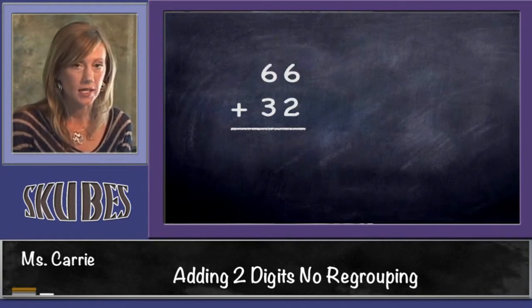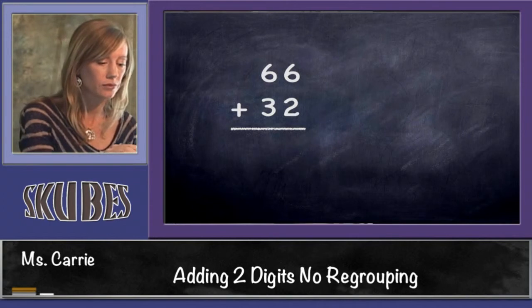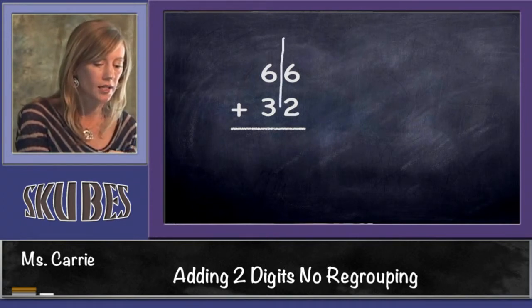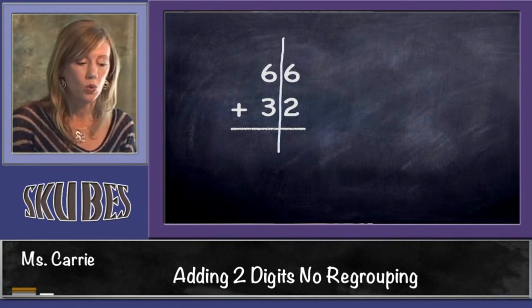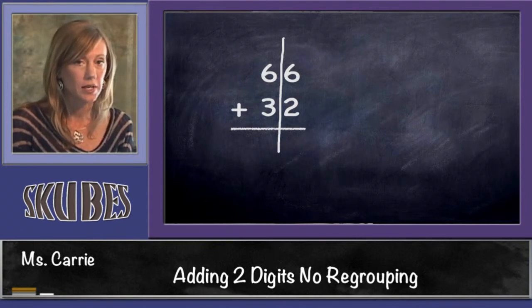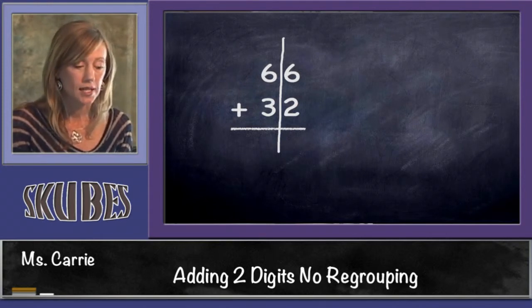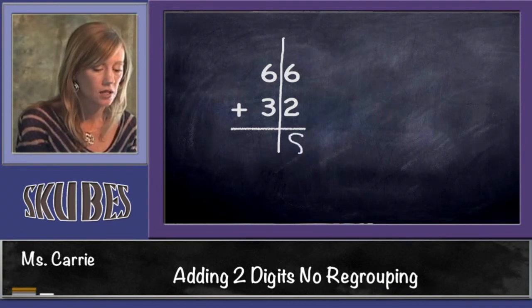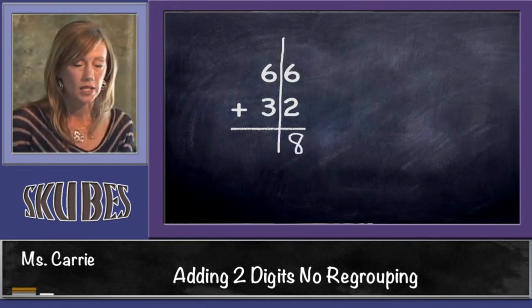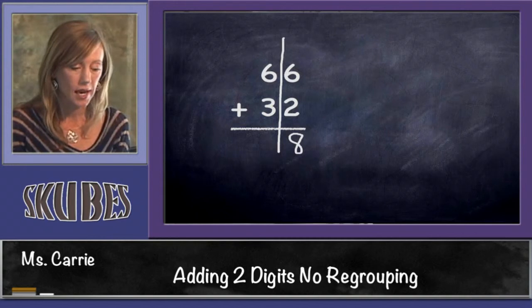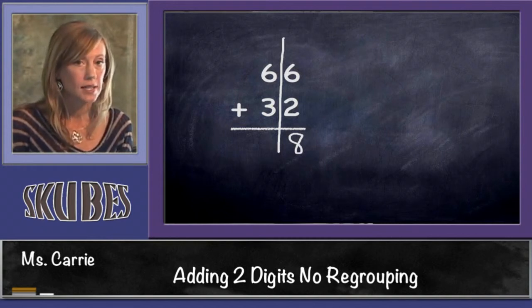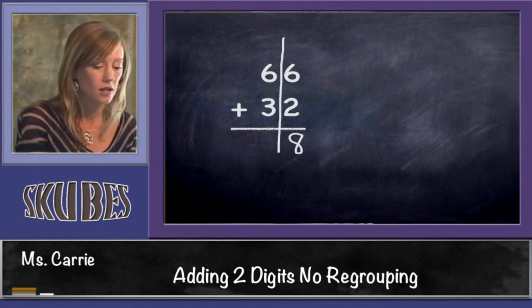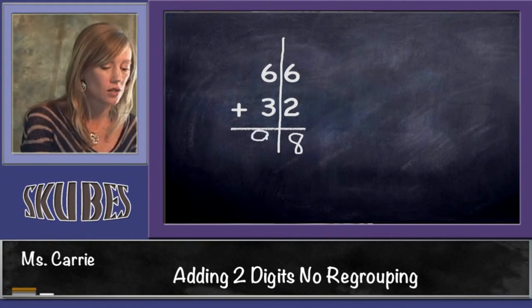Let's try 66 plus 32. Draw our line. Start in the ones column with 6 because it's the bigger number: 6, 7, 8. Six plus 2 is 8. Now let's do 6 plus 3. We'll start with 6 and count up: 6, 7, 8, 9. Our answer is 98.